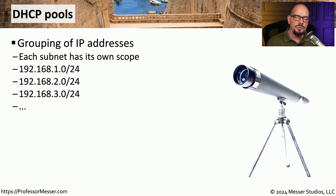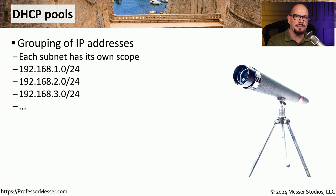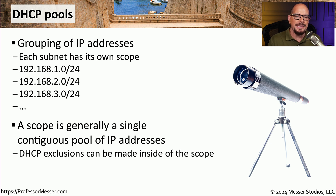There are usually a pool of IP addresses created on a per-subnet basis, and each scope is usually responsible for providing that particular subnet's IP addresses. Usually this is a contiguous pool, so you could tell the DHCP server to assign addresses 1 through 100 on this particular subnet. And then if you want to create exceptions to that, you can add them to the scope as well.